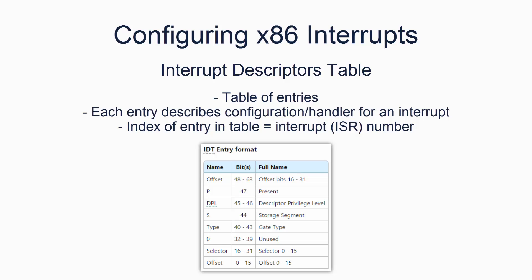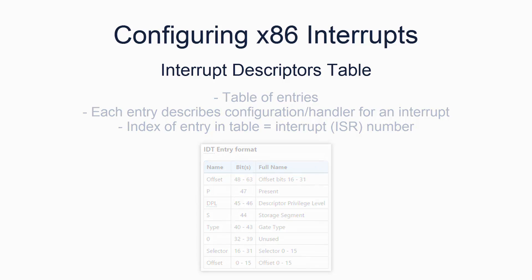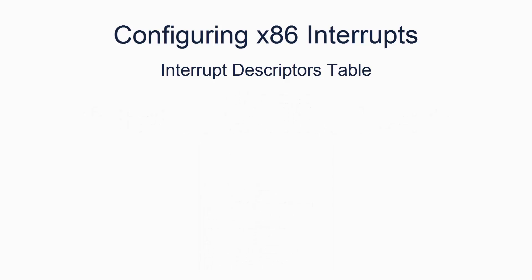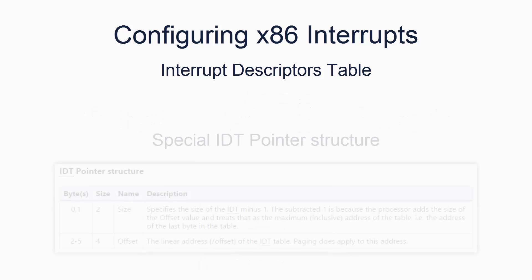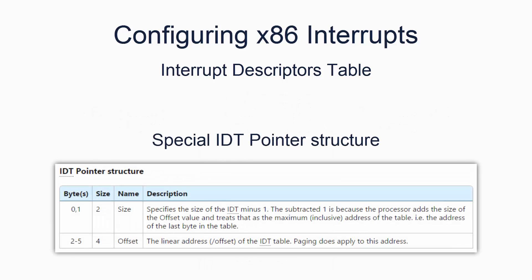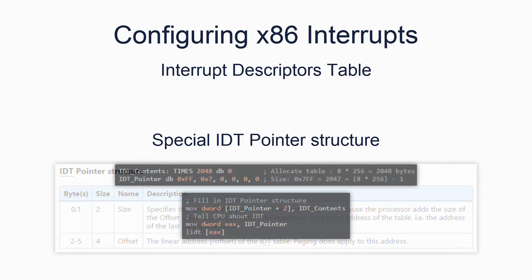As with the GDT, the IDT is a table in memory. Just the same as with the GDT, the processor uses a special pointer to the IDT, which has two bytes of additional information. Code for creating and loading a pointer to the IDT is shown here.